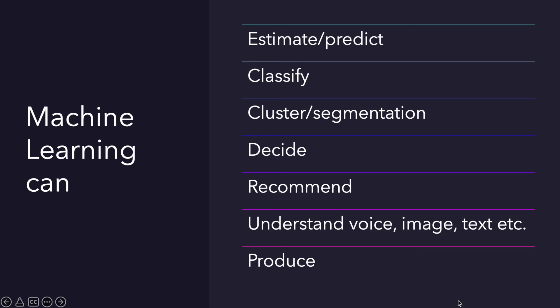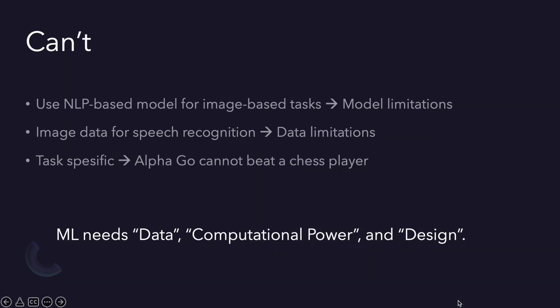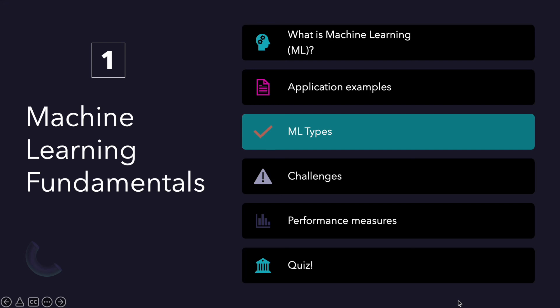Of course, there are some limitations at the moment. For example, you cannot use an NLP-based model for an image-based task — there are model limitations. Or you cannot use image data to train your speech recognition models, so there are also data limitations. As mentioned, they are task-specific. Don't forget that machine learning needs data, computational power (especially in deep learning), and well-designed algorithms. We completed this section. Now we'll see all machine learning types like supervised learning, unsupervised learning, or online learning.